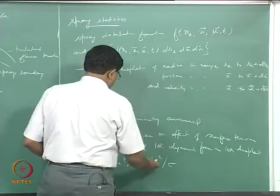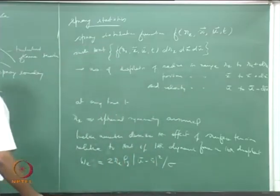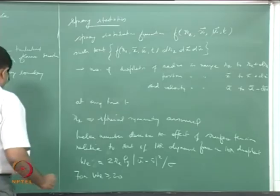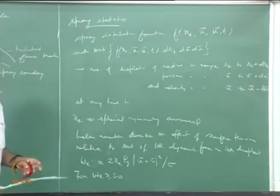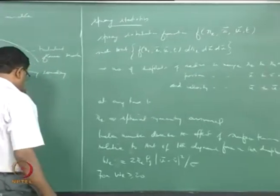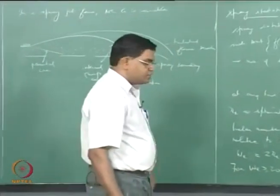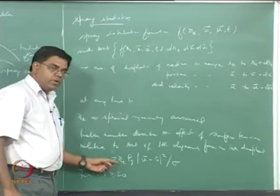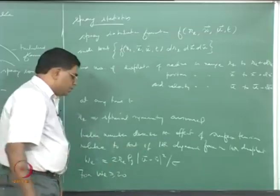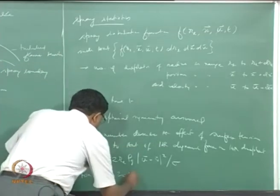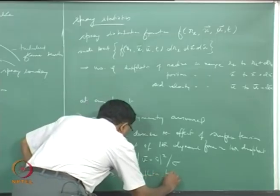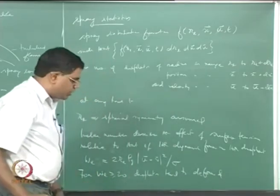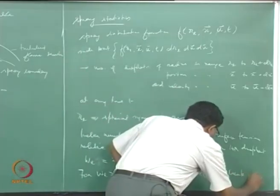For Weber number greater than or equal to about 20, droplets tend to deform and break up. In an atomization situation you are looking at deformation of liquid sheets into ligaments, and ligaments into droplets — a high Weber number situation. Once you get to fairly small droplets, the Weber number becomes small and surface tension takes over.